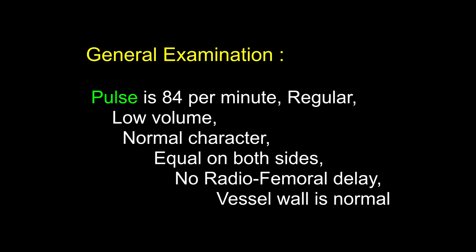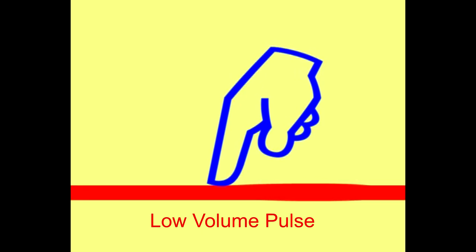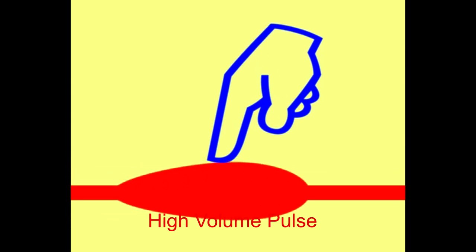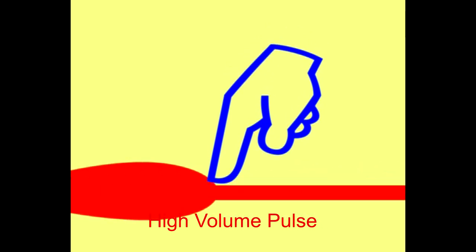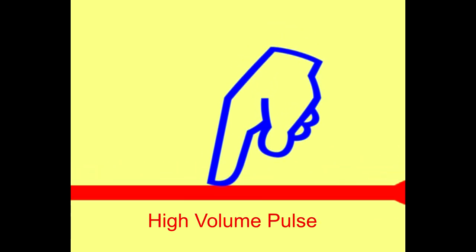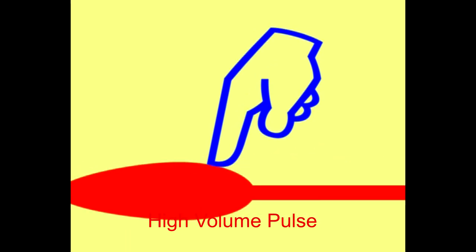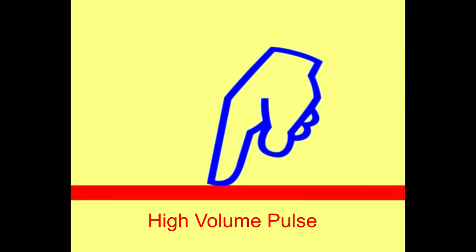The volume of the pulse is the degree of expansion of the artery between its empty state during diastole and filled state in systole. A low volume or hypokinetic pulse signifies a low cardiac output state as in mitral stenosis, aortic stenosis, coarctation of aorta, congestive cardiac failure, and shock. A high volume or bounding pulse signifies high pulse pressure due to hypertension or increased cardiac output as in aortic regurgitation, patent ductus arteriosus, or physiologically after exercise, pregnancy, or alcohol, or due to hyperkinetic circulation in fever, anemia, thyrotoxicosis, cirrhosis of liver, and AV fistulae.